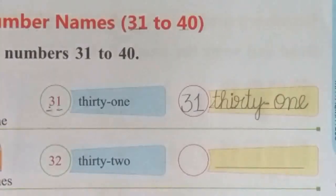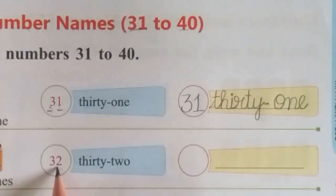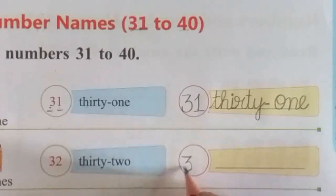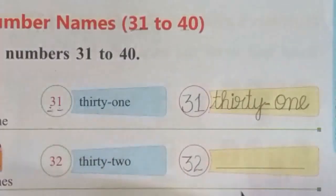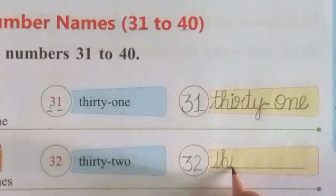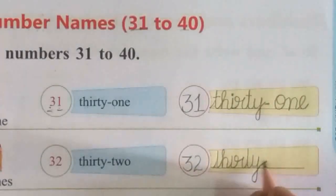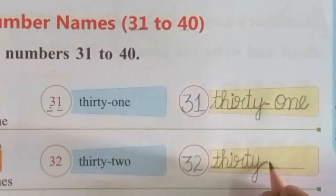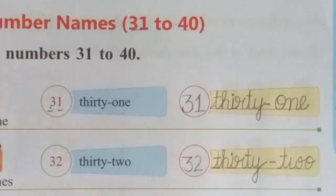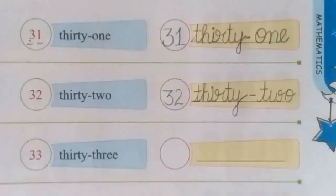Next: 3, 2 — 32. Write here number 32. The number name is T-H-I-R-T-Y, 30, dash, T-W-O, 2. Thirty-two.